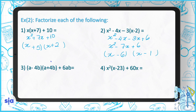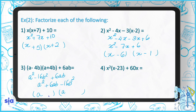Question 3: multiply the two brackets first, giving a squared minus 16b squared plus 6ab. Writing them in the correct order: a squared plus 6ab minus 16b squared. We make two brackets: a and a, plus and minus. We're looking for two numbers whose difference is 6 and whose product is 16 — they are 8 and 2. Don't forget to write the b.